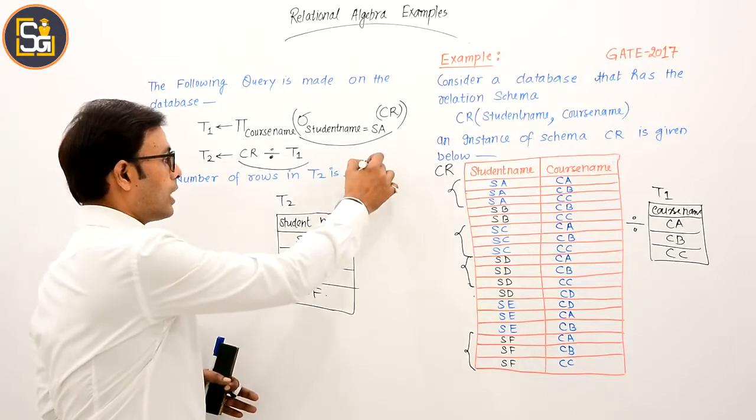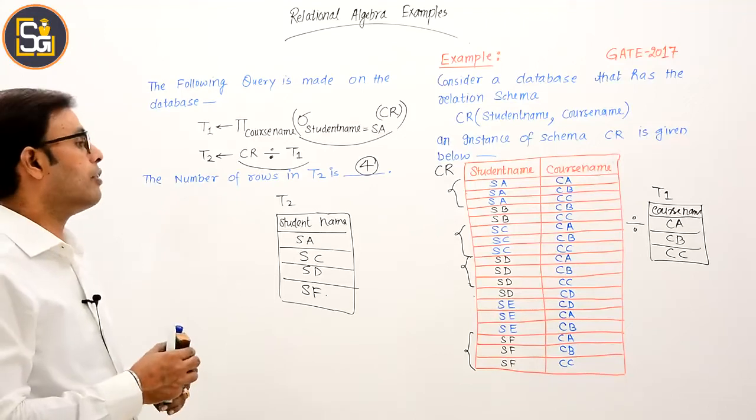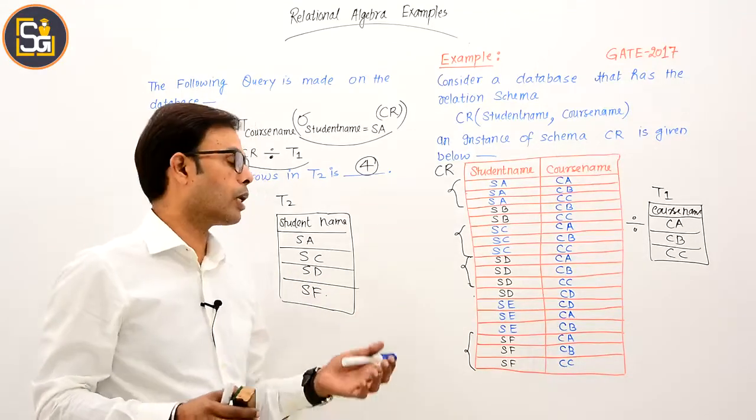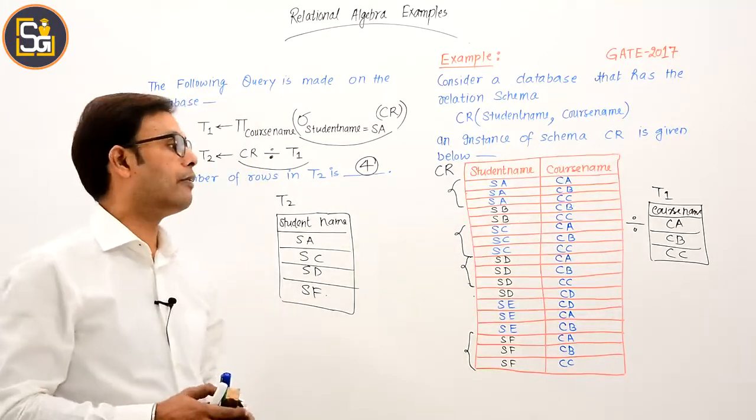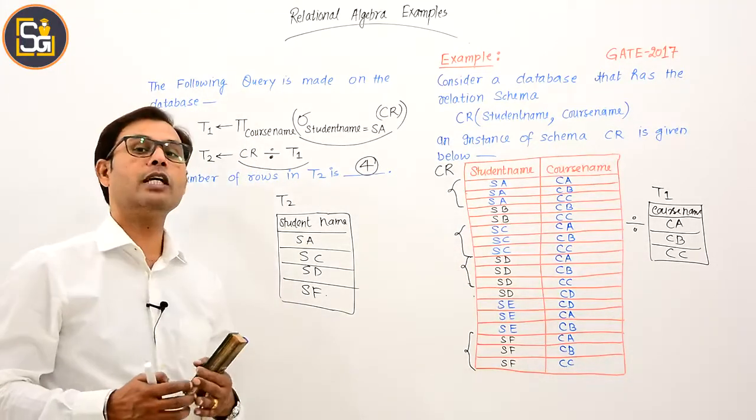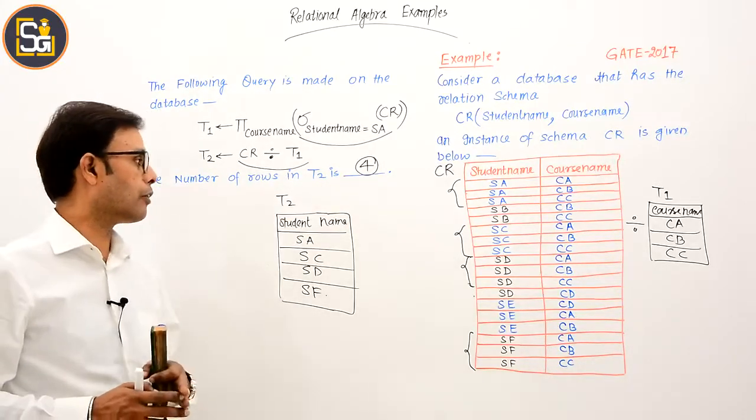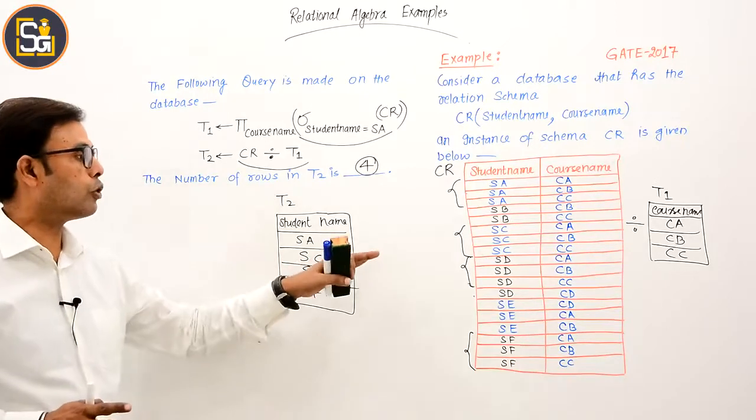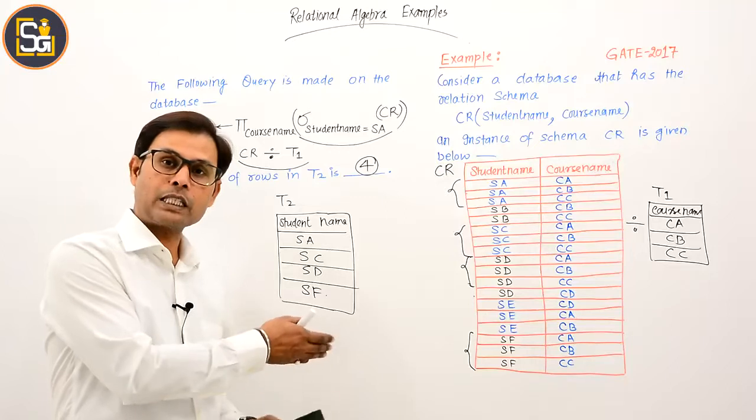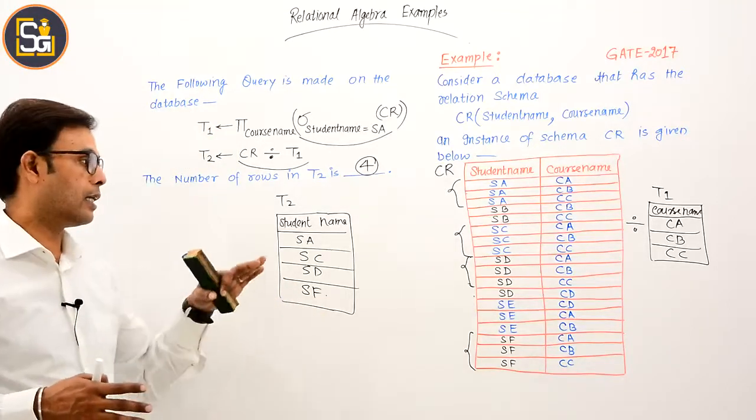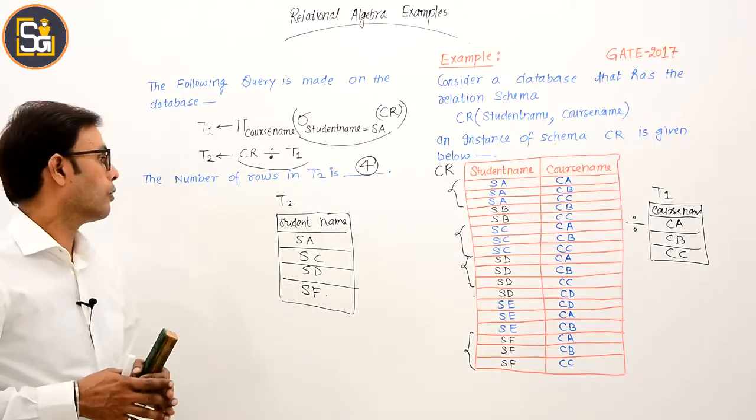So in this way, the direct answer to this question is 4. And if you want to perform division operator operation, you can perform the division operation. If you don't know how, then go back and look at the division operator once. And then again solve it. And that's done.